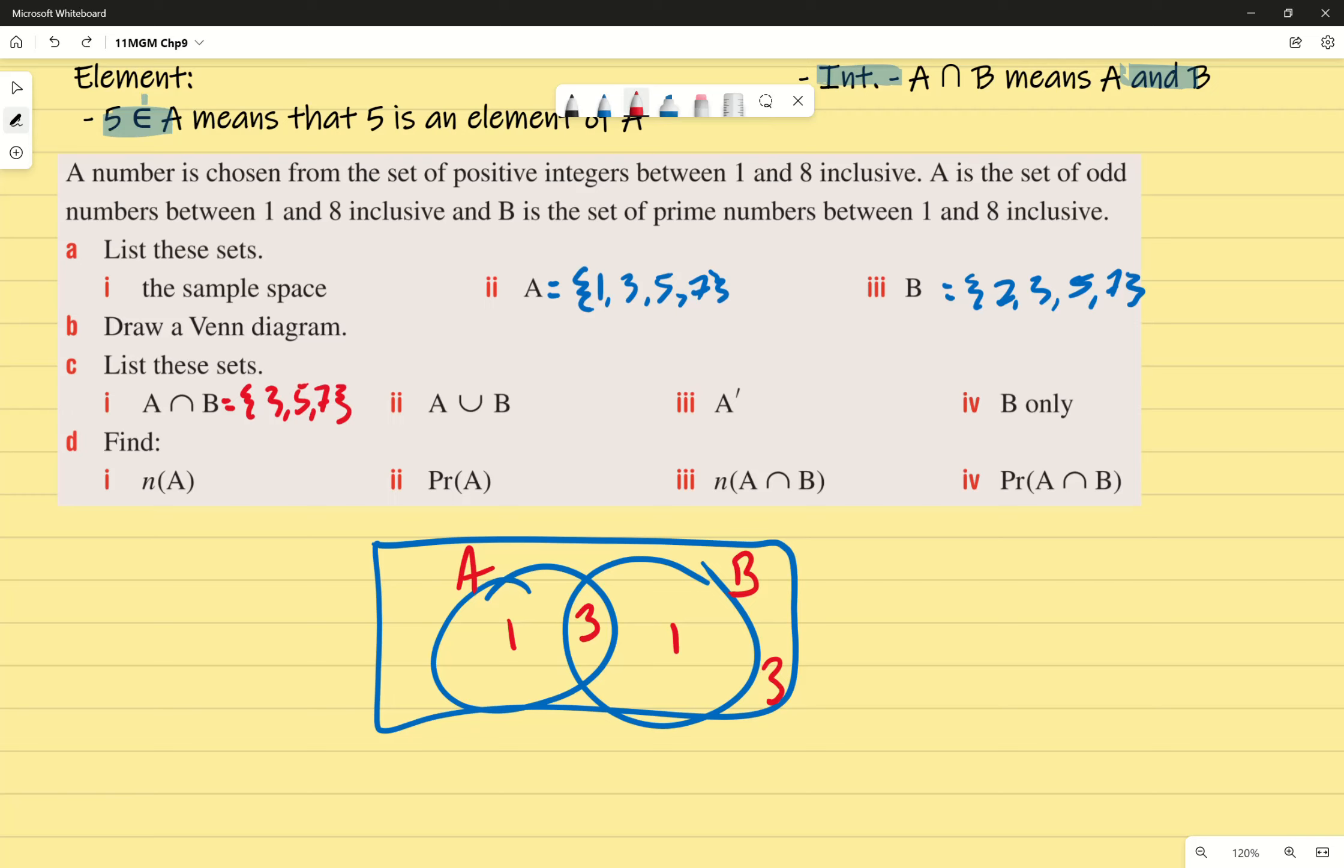A union B, which means I'm looking for, what does union mean again? Or. Thank you very much. It means or. So we're saying, what numbers are either A or B? Which gives me an answer of one, two, three, five, and seven. Is that a bit small for you guys at the back? No. Okay.